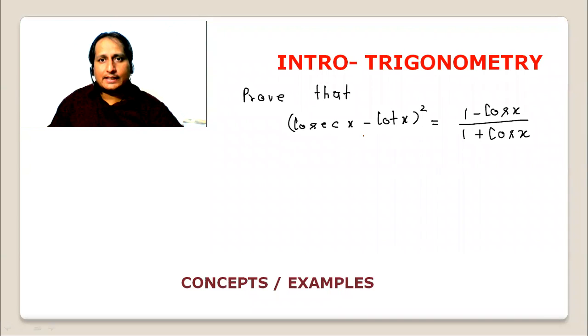Prove that (cosec x - cot x)² equals (1 - cos x)/(1 + cos x). To expand (a - b)², we get a² plus b².